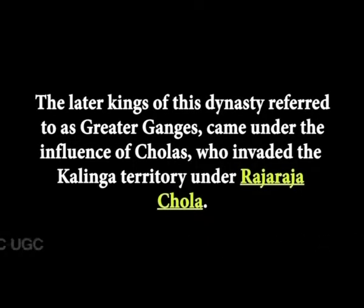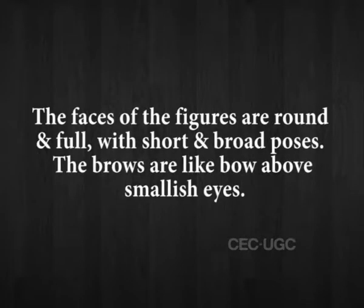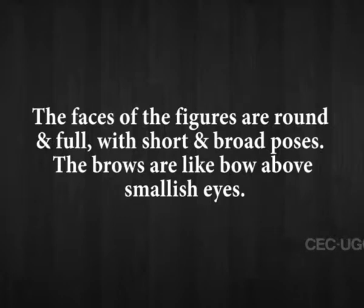The later kings of this dynasty, referred to as the Eastern Gangas, came under pressure from the Cholas, who invaded the Kalinga territory under Raja Raja Chola. With the coming of Anantavarman, the Gangas asserted their independence by 1090. He is known as the founder of the Jagannatha temple at Puri, and another ruler, Narasimha I, was responsible for the sun temple at Konark. These temples are embellished with numerous sculptures. The faces of the figures are round and full with short and broad noses; the brows are like bows above lotus-shaped eyes. They wear short drapery, both plain and patterned, ending above the knees, and are adorned with heavy jewellery, with hair in the miller style forming a large round coil at the back.